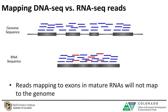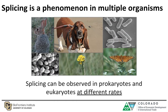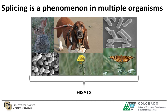An example of such an aligner is HISAT2. Splicing is observed in multiple organisms at different rates, and because it is observed in multiple organisms, if you are performing RNA-seq and you want to map your RNA-seq reads back to the genome, you want to use a splice-aware aligner such as HISAT2.